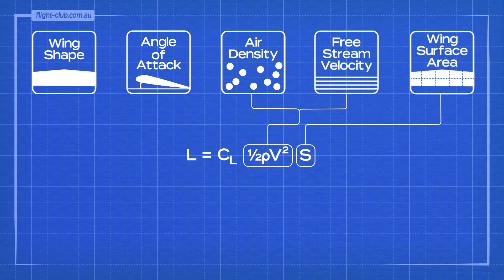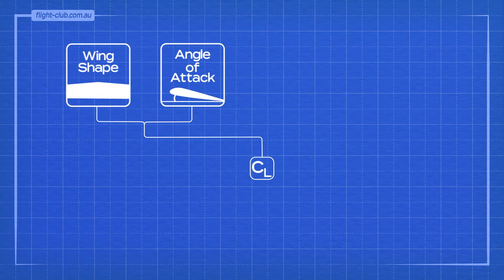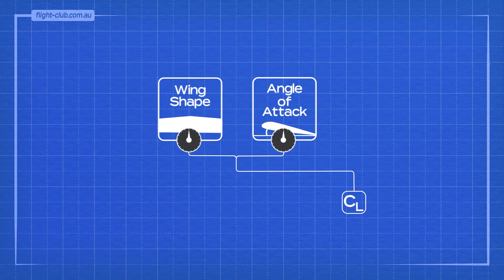Now we are left with wing shape and angle of attack. It just happens that wing shape and angle of attack are the two factors that form the coefficient of lift. Let's assume that the wing shape is fixed. If we lock a certain value for wing shape, this means that any change in the coefficient of lift can only be due to the change in the angle of attack.